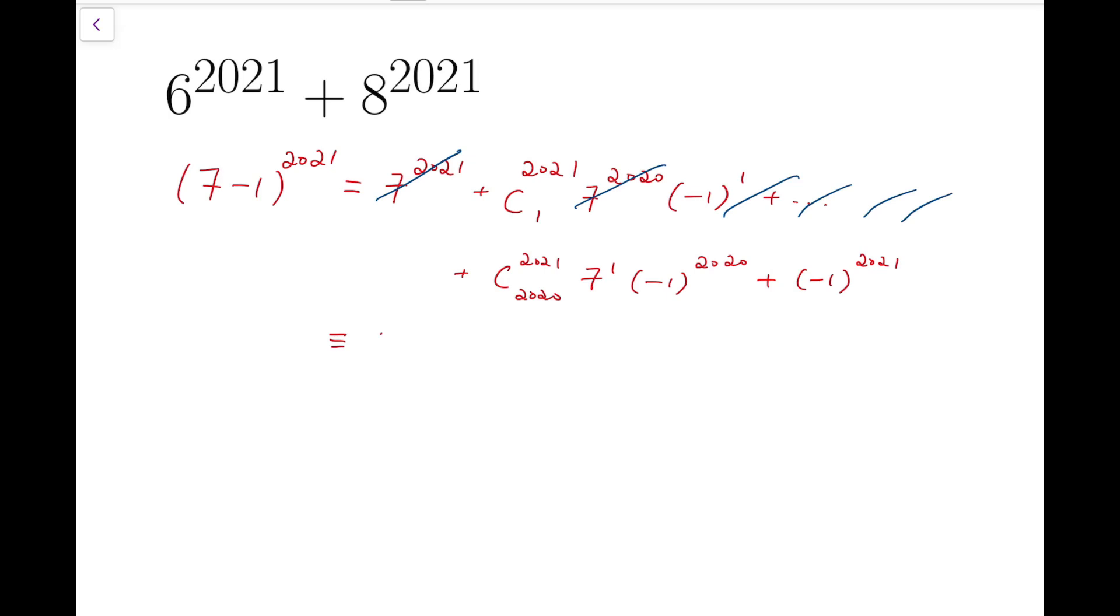And what's left are just the final two terms, which is 2021 times 7 times 1 minus 1. So 6 to the power of 2021 has the same remainder as this when it's divided by 49.